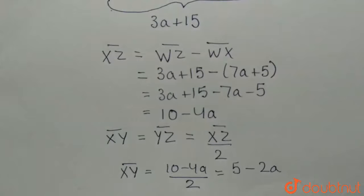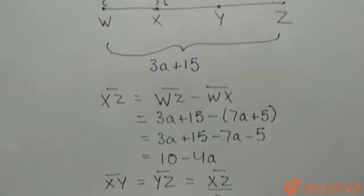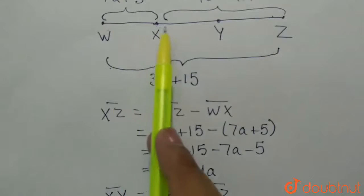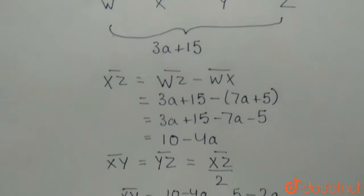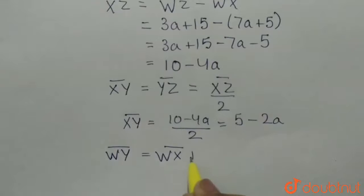Now, we need to calculate the value of WY. So, to get WY, we will add WX and XY. So, WY is equal to WX plus XY.